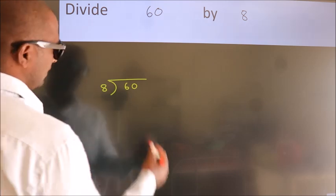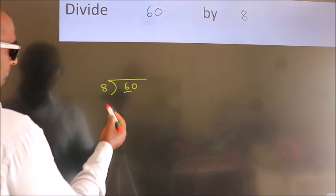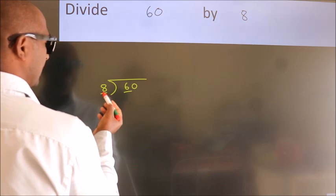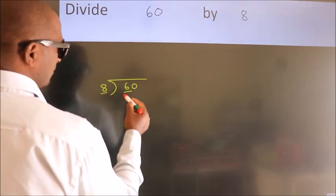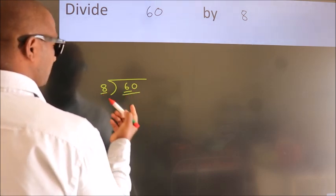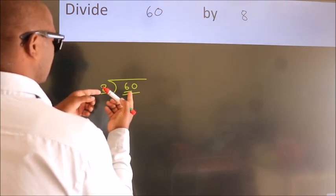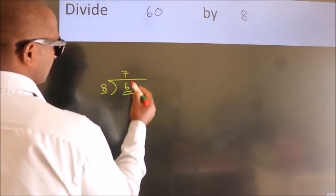Next, here we have 6, here 8. 6 is smaller than 8, so we should take 2 numbers: 60. A number close to 60 in the 8 table is 8 times 7, which is 56.